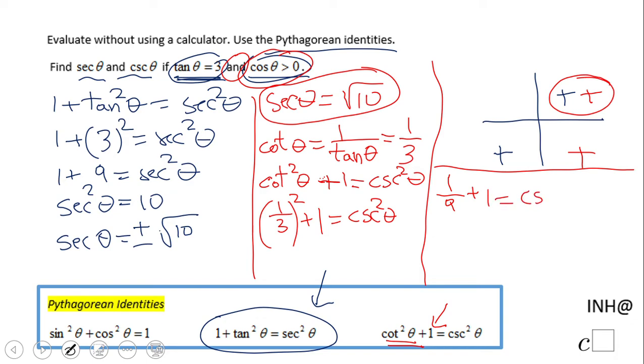That means csc²θ equals 10/9. So cosecant will be square root of this, and we know by now that everything is positive, so it's going to be √10/√9 which is 3.